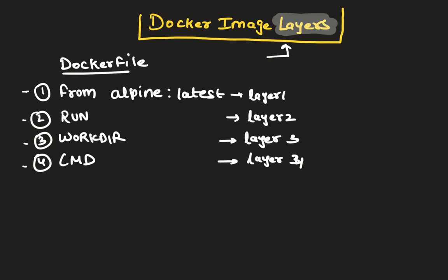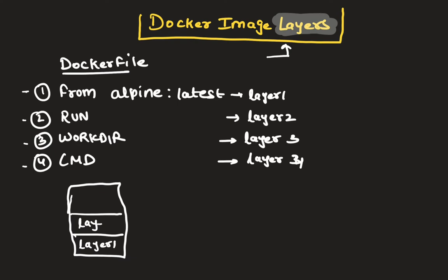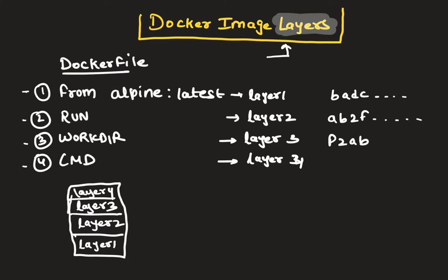In our specific example, let's assume all instructions are creating different layers. Each line is read one by one and Docker will create different layers during build time. All the layers will be stacked up. In the bottom I'll have layer one, then layer two, then layer three, then layer four. This is how Docker stacks up the different layers, and every layer will have its own unique alphanumeric crypto ID — for example, something like 'abdc...' for layer one, 'ab2...' for layer two, 'p2ab...' for layer three, and 'f1...' for layer four.